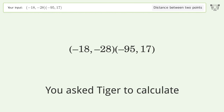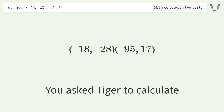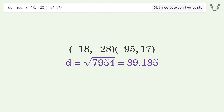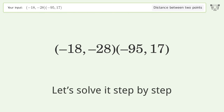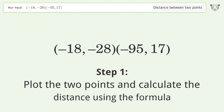You asked Tiger to calculate this. It deals with the distance between two points. The distance between the two points is the square root of 7954, or 89.185. Let's solve it step by step: plot the two points and calculate the distance using the formula.